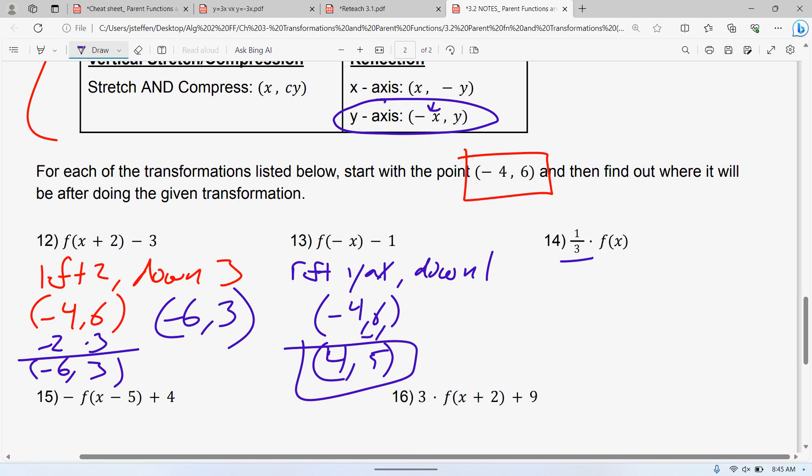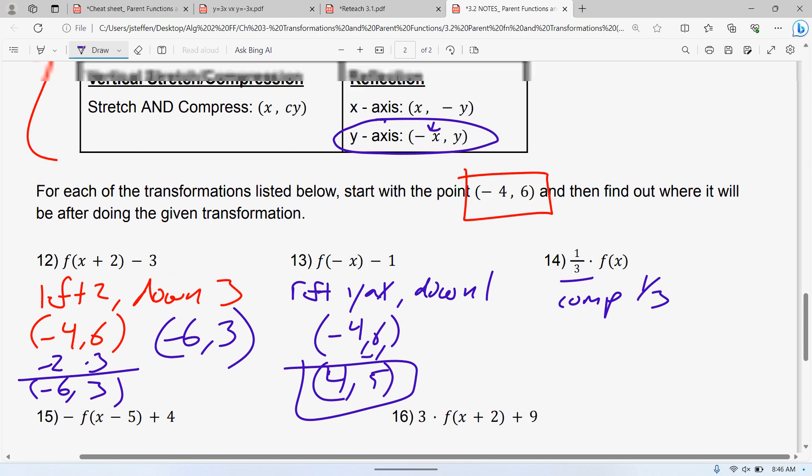The next one is 1/3, and it's a compression. So it's a compression by 1/3. Now, the thing I like about a stretch or compression, it doesn't actually matter what one it is, you're multiplying it into your y-value. So whether it is multiplying it by a fraction or multiplying it by a 3 or a 4, whatever it is, you're multiplying. So this one is negative 4, 6, and I multiply that 6 by 1/3. So I end up getting negative 4, 2. Use your calculator if you need to.